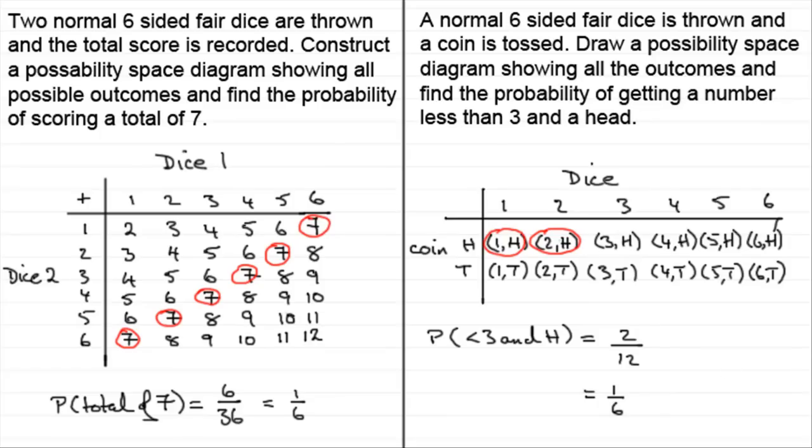OK, well, I hope that's given you some idea of how you can construct possibility space diagrams. But you can only do this if you've got equally likely outcomes. There are other ways of doing questions like this, as you'll see later. One way is by probability tree diagrams. But for now, that brings us to the end of this tutorial.